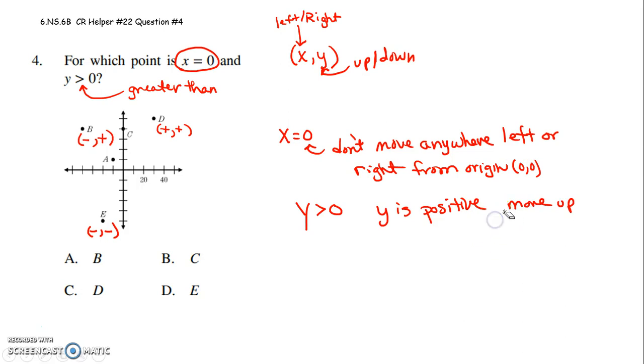So if y is positive, that's telling me move up. So if x is 0 and y is positive, it says if I start here at the origin, x of 0, don't move anywhere left or right. So if y is positive, it says move up.